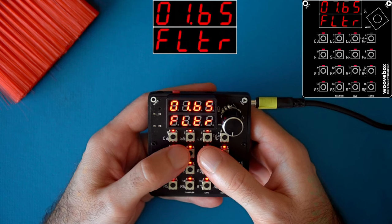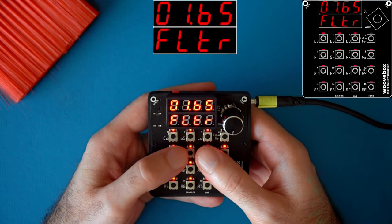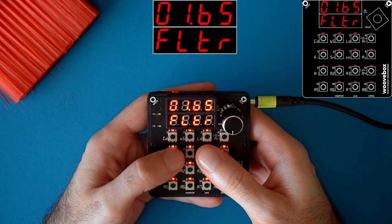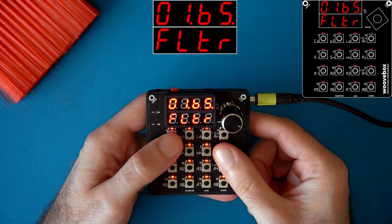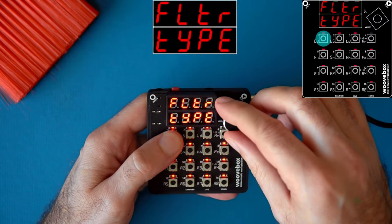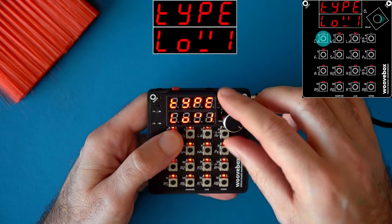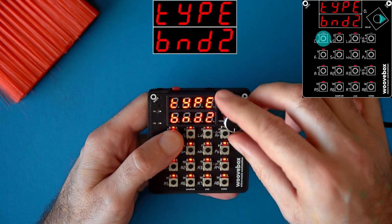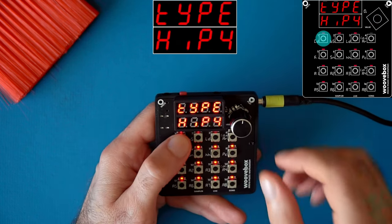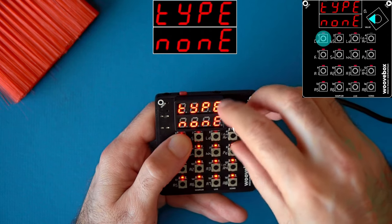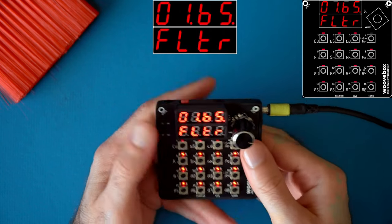So before we start, what is a filter? Simply stated, a filter is a tool that can remove certain frequencies from a sound as well as add energy using resonance. The first parameter on the filter page is the filter type. The Woof Box actually has 10 different filters to choose from. I will go through these in detail at the end of the video. So for the rest of this demo I am going to just pick the first low-pass filter.